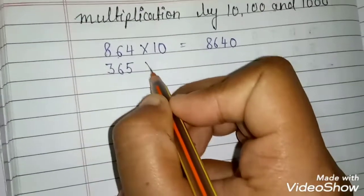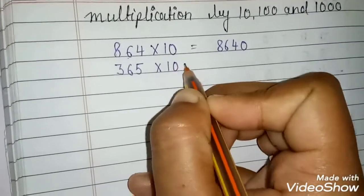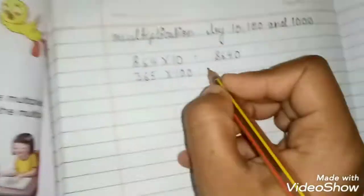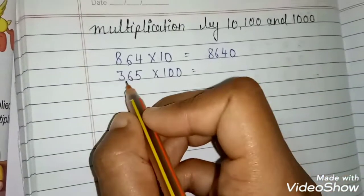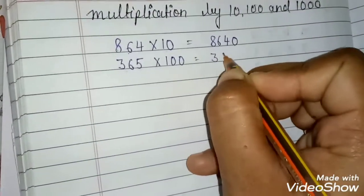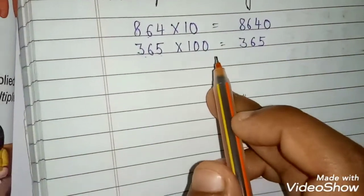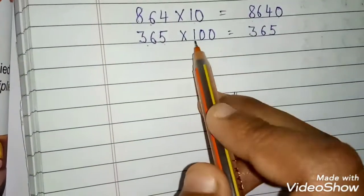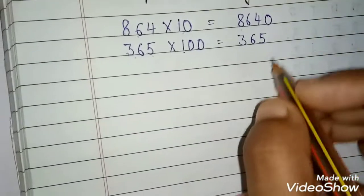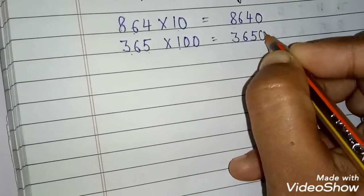Take another number. 365 × 100. Now first you will write the digit as it is. And now you will count how many zeros you have. 1, 2. Two zeros you have. Two zeros you will put here at the right.